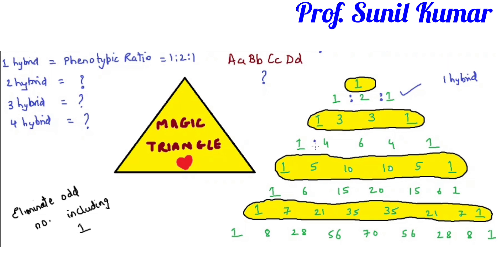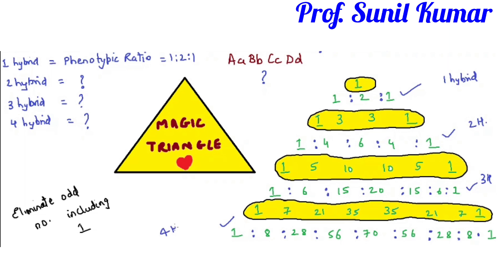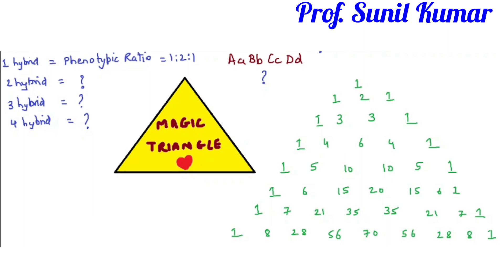The remaining even-level rows give the phenotypic ratios for post-Mendelian genetics. For one hybrid: 1:2:1. For two hybrids (polygenic): 1:4:6:4:1. For three hybrids: 1:6:15:20:15:6:1. For four hybrids: 1:8:28:56:70:56:28:8:1. You don't have to memorize these — just draw the magic triangle and read off the correct row.